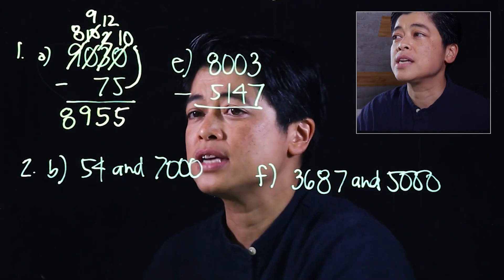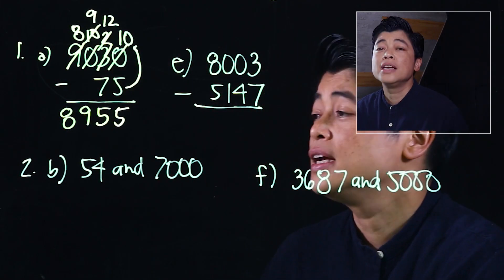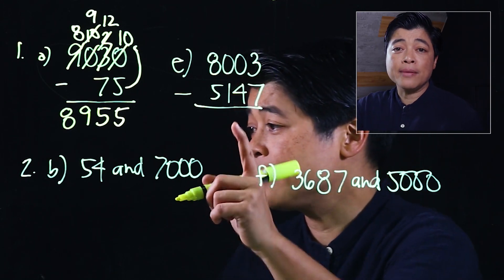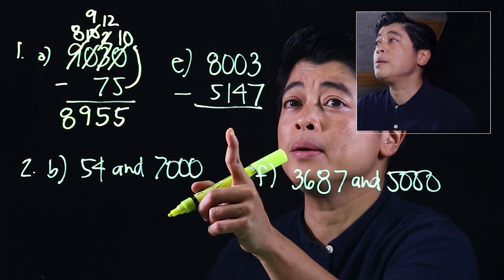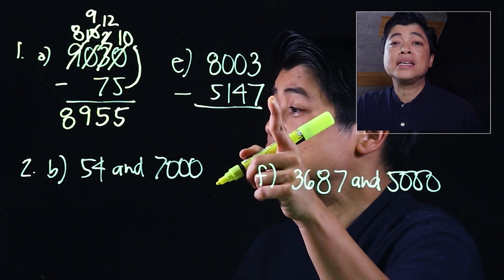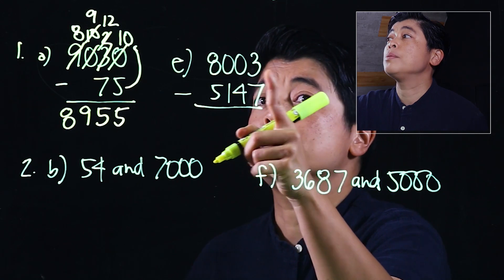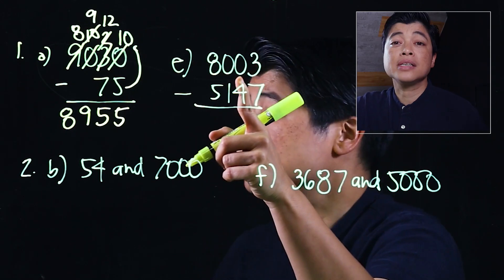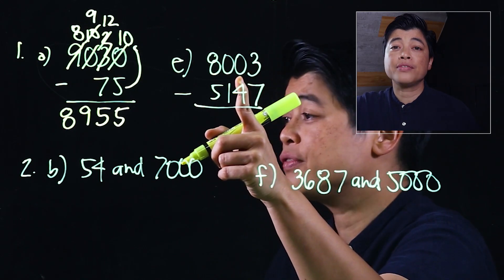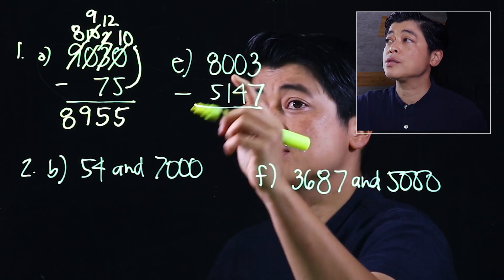Then we subtract nothing from nine, and this is eight, so the answer is eight thousand nine hundred and fifty-five. For the next problem, we cannot take away seven from three. We need to borrow, but there's nothing to borrow from the tens or the hundreds.